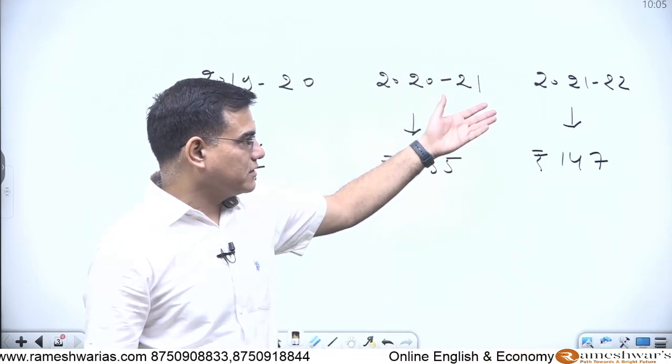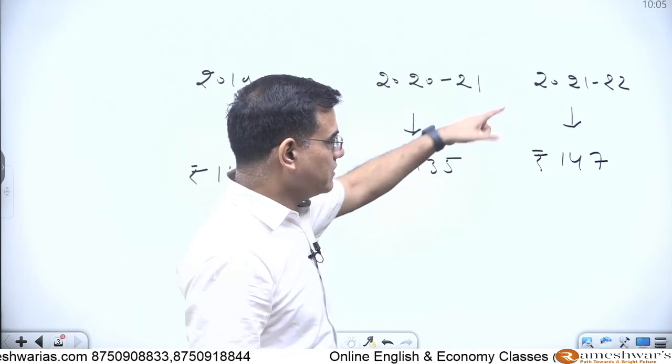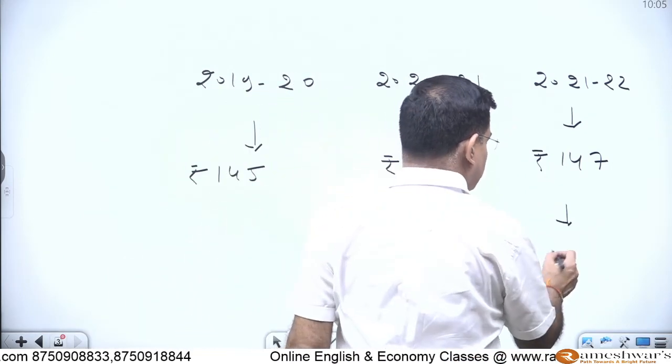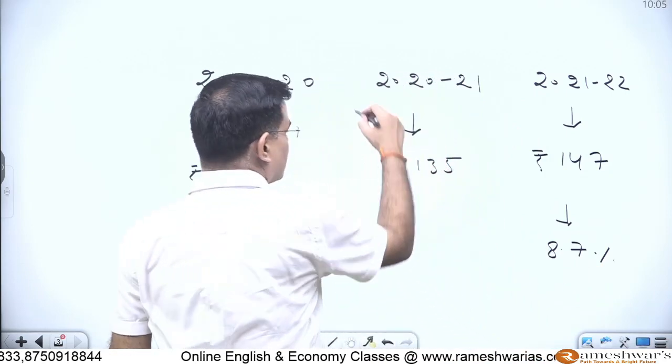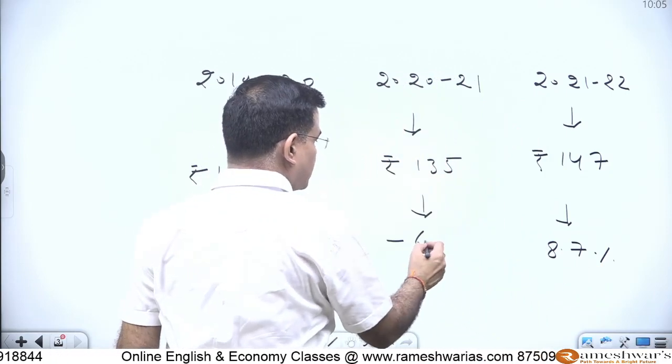So if you get the growth rate of this year 2021-22 the growth rate is 8.7 percent while growth rate for this year is minus 6.6 percent.